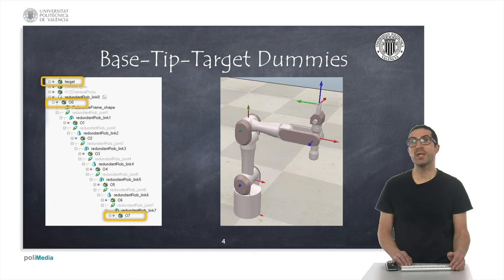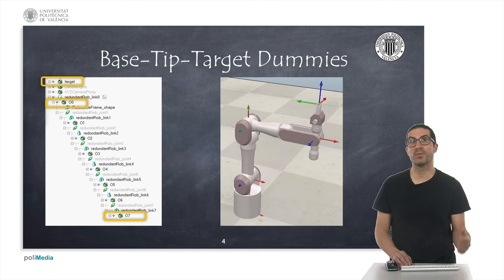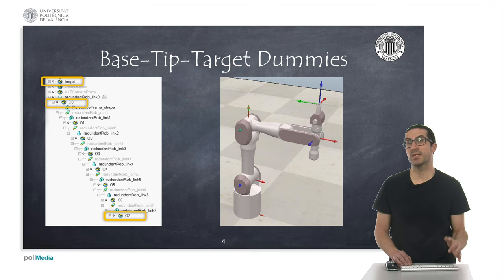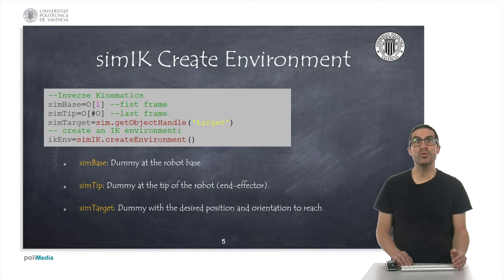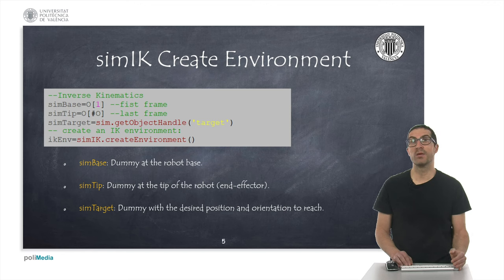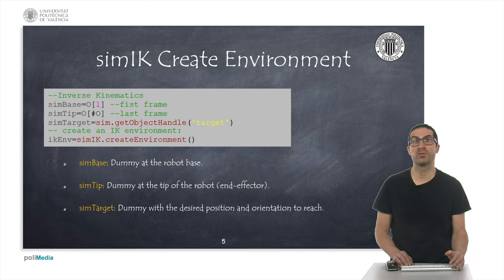The dummies shown here are based on the previous example we saw in a previous video about forward kinematics. The base dummy is named O0, the tip dummy is named O7, and the target dummy is named Target — this is a new dummy. All these dummies are actual objects in the CoppeliaSIM scene. To work with the CoppeliaSIM IK plugin, we need to create a number of objects starting with the IK environment, which is some kind of internal session that allows us to configure all the remaining elements needed to solve the problem.